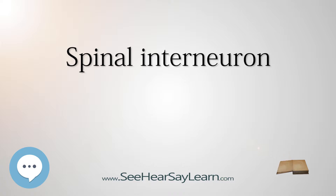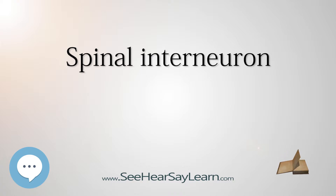V3 neurons are excitatory commissural interneurons that extend caudally projecting primary axons. The V1 neurons are inhibitory interneurons with axons that project ipsilaterally and rostrally. V2 neurons, which include a population of glutamatergic V2A neurons and inhibitory V2B neurons, project ipsilaterally and caudally across multiple spinal cord regions. The class V1 neurons give rise to 2 local circuit inhibitory neurons known as Renshaw cells and IA inhibitory interneurons.